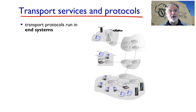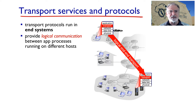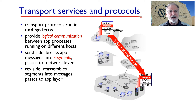The transport layer runs only on end systems. This layer provides logical communications between application processes running on different hosts. The sending side breaks application messages into segments and passes them to the network layer. The receiving side reassembles segments into messages and passes them to the application layer.